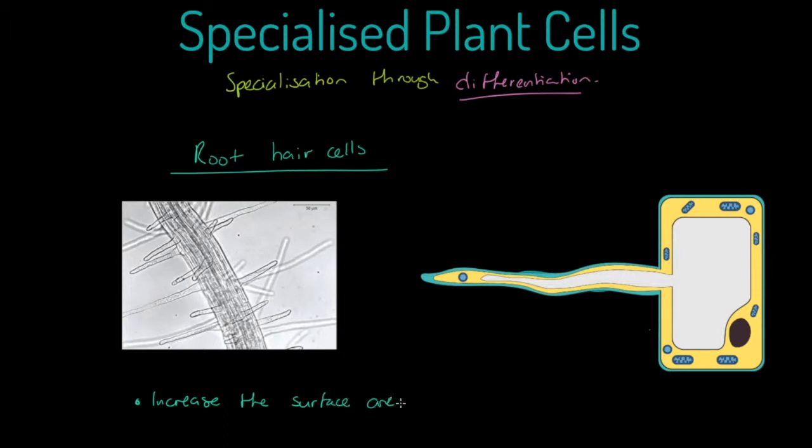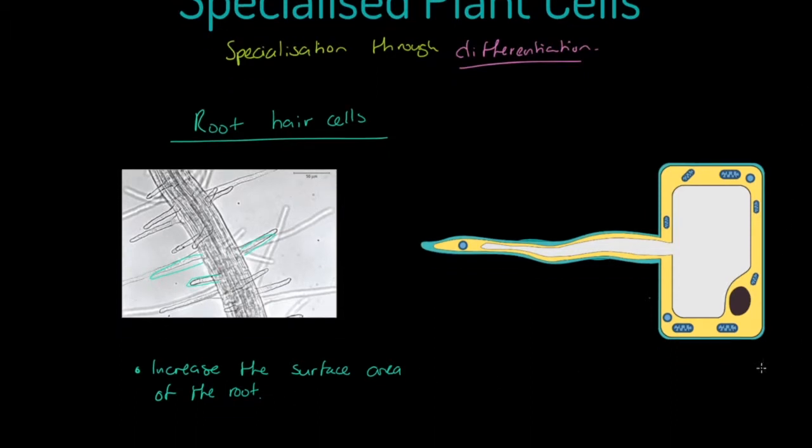If we have a look at this magnified image, we have root here. We can clearly see that this root branch has these root hair protrusions and these root hairs increase the surface area of the root as a whole. That's obviously really positive and a functional feature of this cell.